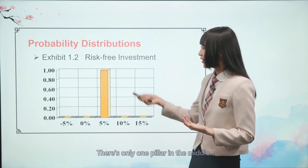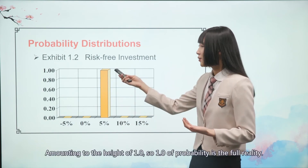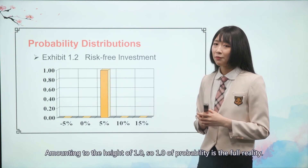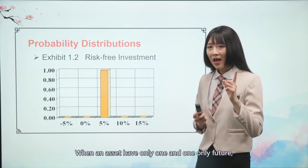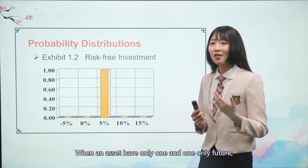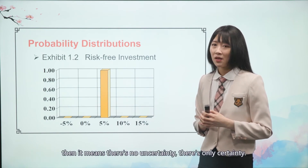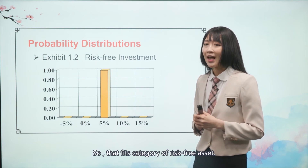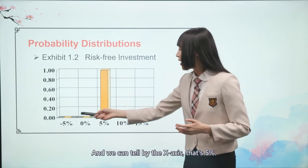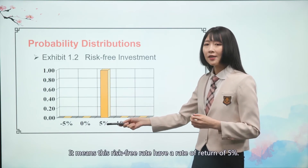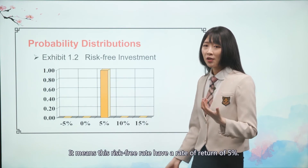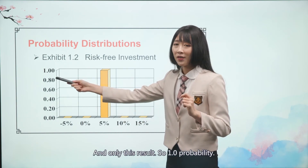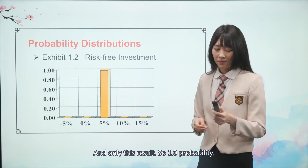There's only one pillar in the middle, amounting to a height of 1.0. A probability of 1.0 is the full reality. When an asset has one and only one future, it means there's no uncertainty — there's only certainty. That fits the category of a risk-free asset. We can tell by the x-axis that it's 5%, meaning this risk-free asset has a rate of return of 5%, and only this result — a 1.0 probability.